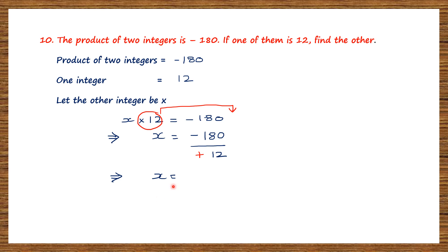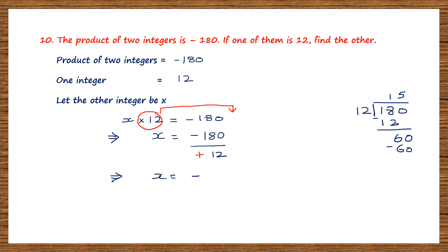First, let's work on the signs: we have one negative and one positive. In division, when signs are different, the answer is always negative — so we have a minus sign. Now divide 180 by 12: take 18, 12 ones are 12, remainder 6; bring down 0 to get 60; 12 fives are 60, remainder 0. So x equals minus 15.